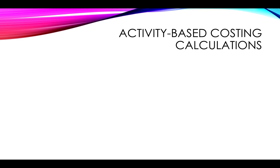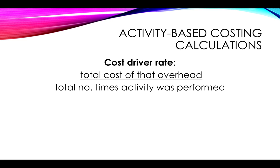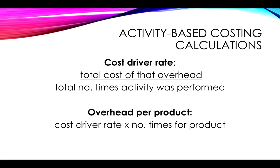So how do we do these calculations? To determine the cost driver rate, take the total cost of that overhead — in our case R20,000 — and divide by the total number of times that activity was performed. Product A was 8 times, and you add products B and C to get the total of 20 times, even if you weren't told that 20 ads were placed. The overhead cost per product is then the R500 cost driver rate times the number of times for that particular product — in our case times 8 — giving us the R4,000 total overhead for that product.